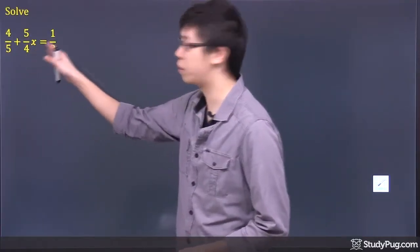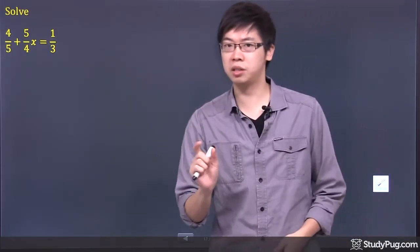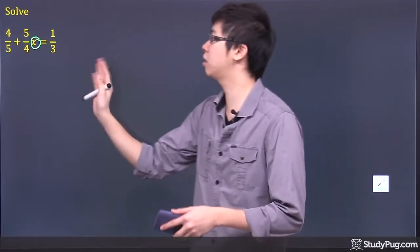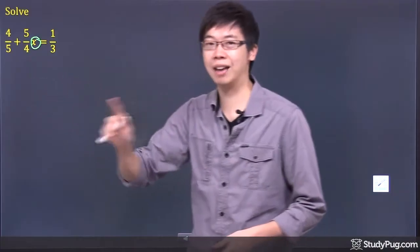We've got 4 over 5 plus 5 over 4x equal to 1 over 3. Now, the idea is simple. You want to solve the x which is here, right? You have to remove anything that's further away from it first. So the 4 over 5 has to go first.